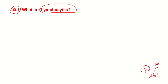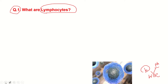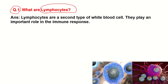Lymphocytes are produced by lymph glands or lymph nodes. Lymphocytes are the second type of white blood cells and they play an important role in the immune response. A lymphocyte has a large and rounded nucleus and a relatively small amount of non-granular cytoplasm. Lymphocytes tend to be nearly round in shape and only show limited movement.